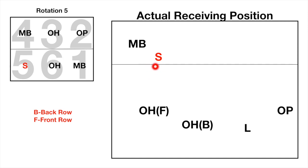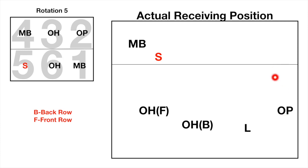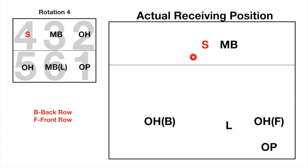In rotation five, similar to rotation six, the setter from the back row stands in the front row, and the outside hitter from the front row falls back to the back row to receive, along with the outside hitter from the back row and the libero. The opposite spiker falls back a little bit.